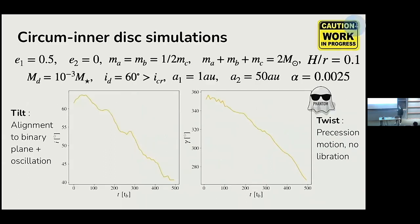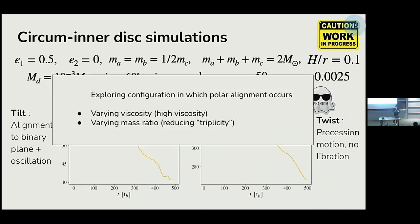We are also testing this with SPH simulations, though they are still work in progress as we need more orbits. We are seeing that for these stellar orbit parameters, the tilt and twist profiles indicate the circuminner binary disk is aligning to the orbital plane. With these parameters we would expect a pure binary to undergo polar alignment. We are planning to vary the viscosity and inner binary mass ratio to test configurations in which polar alignment is expected also around the inner binary.